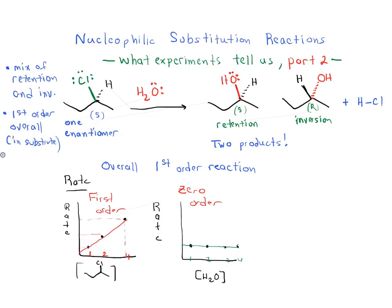Here's the last very interesting piece of information about this reaction. Let's say we start with 2-chlorobutane and measure the rate of this reaction, then compare it to the rate of the reaction with 1-chlorobutane, asking which reaction is faster while keeping everything else the same. As it turns out, the reaction with 1-chlorobutane is very, very slow, and the reaction with 2-chlorobutane is faster.